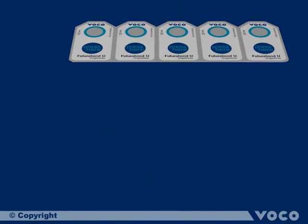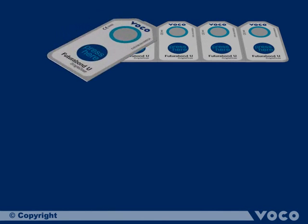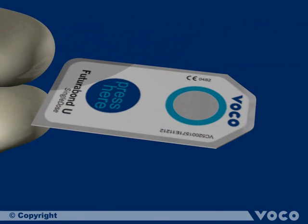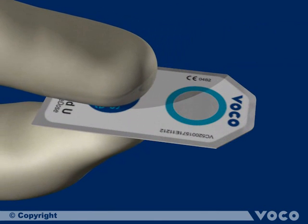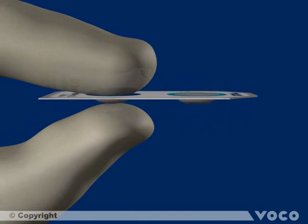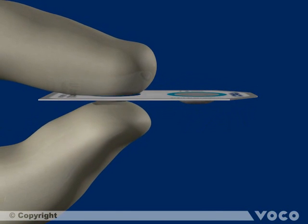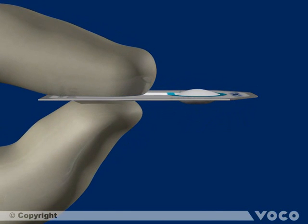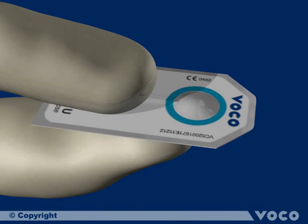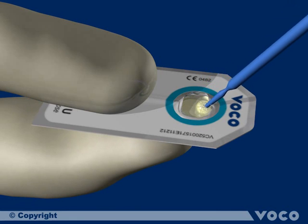Activation of the Futurabond U blister by pressing firmly between thumb and forefinger. Break the seal of the protective foil with an applicator, mixing until the liquid is homogeneous and completely wets the applicator.